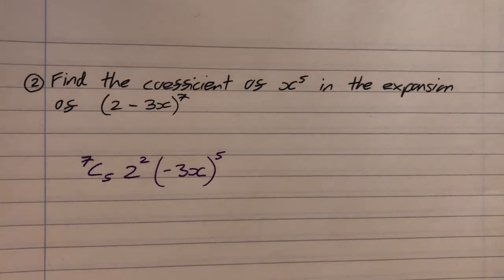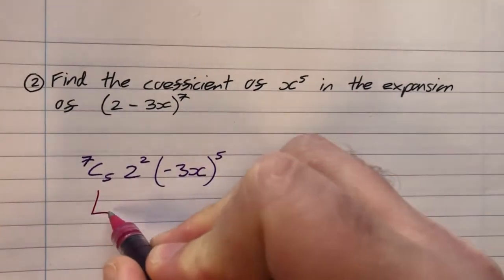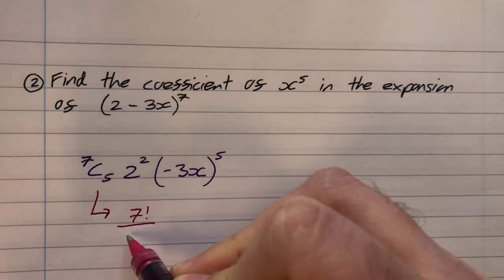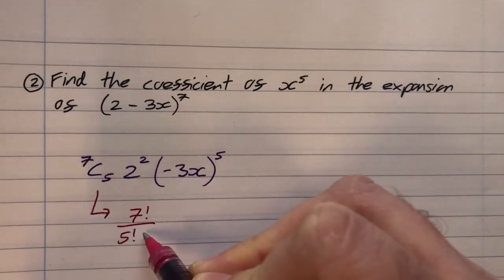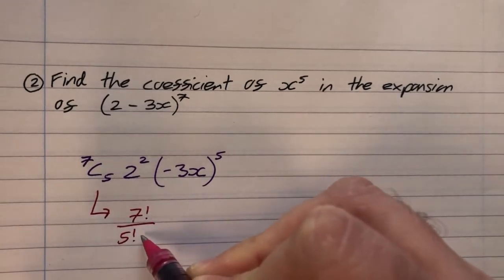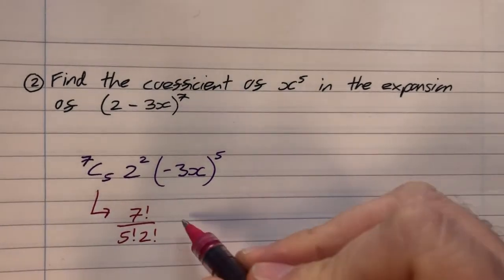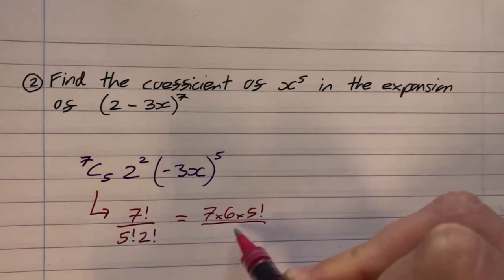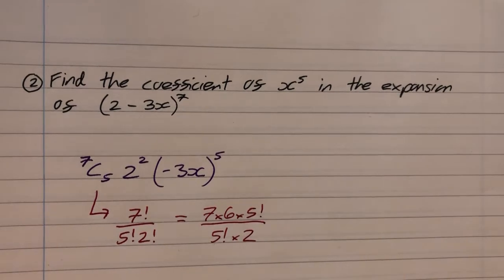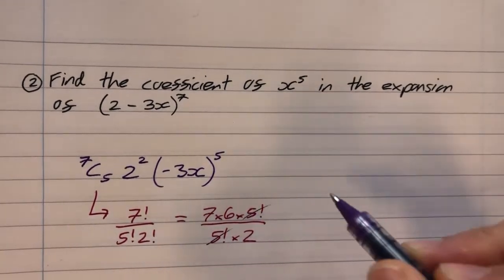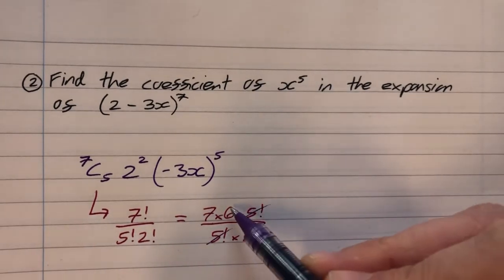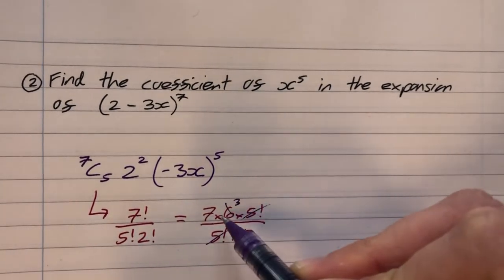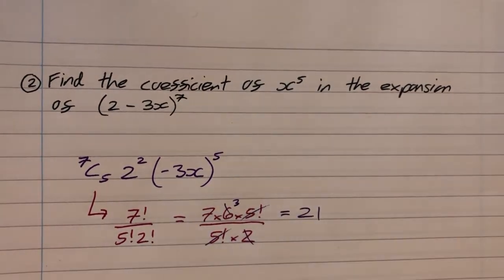So 7C5, you're going to calculate that one. So you can either use the calculator. I quite like using the factorial definition just to keep my mind fresh. So 7 factorial divided by 5 factorial times 7 minus 5 factorial, which is 2 factorial. At the top, then, is going to be 7 times 6 times 5 factorial divided by 5 factorial times 2, because 2 factorial is 2. And then we can see that the 5 factorial top and bottom will cancel. And then the 6 and the 2 will cancel to make a 3. So I've got 7 times 3. So the answer to that is 21.